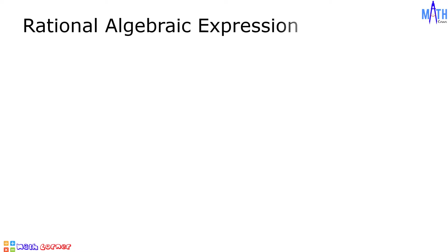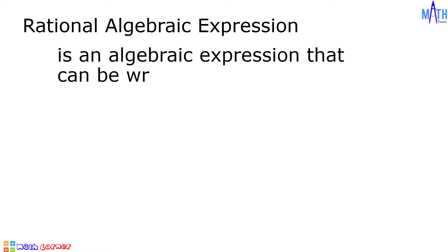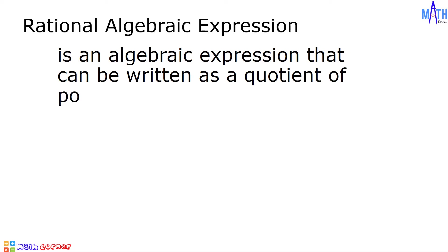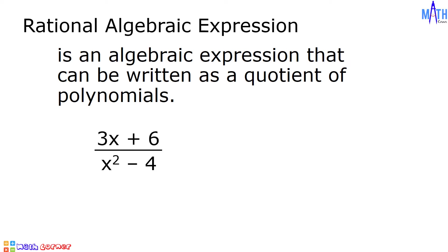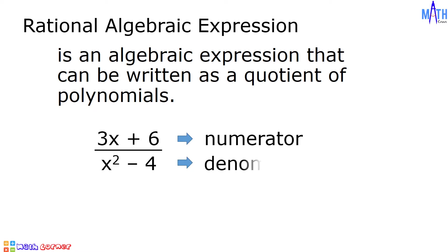A rational algebraic expression is an algebraic expression that can be written as a quotient of polynomials. For example, 3x plus 6 all over x squared minus 4. In this rational expression, 3x plus 6 is the numerator and x squared minus 4 is the denominator.